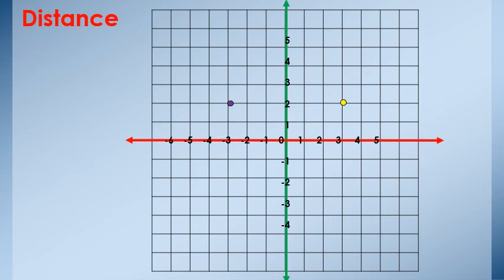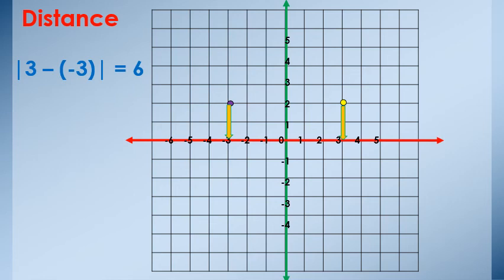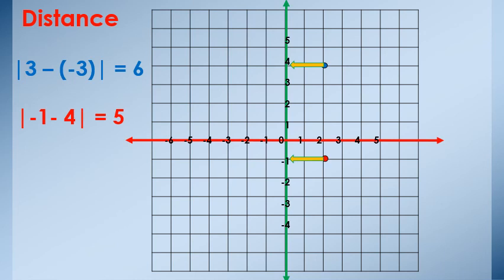Find the distance. One point at axis X at 3 and another point at axis X at negative 3. We find the absolute value of the difference: absolute of 3 minus negative 3 equals 6 units. Two points on axis Y at negative 1 and 4: absolute of 4 minus negative 1, or negative 1 minus 4, equals 5. Two more points at 5 and 0: absolute of 5 minus 0 equals 5.